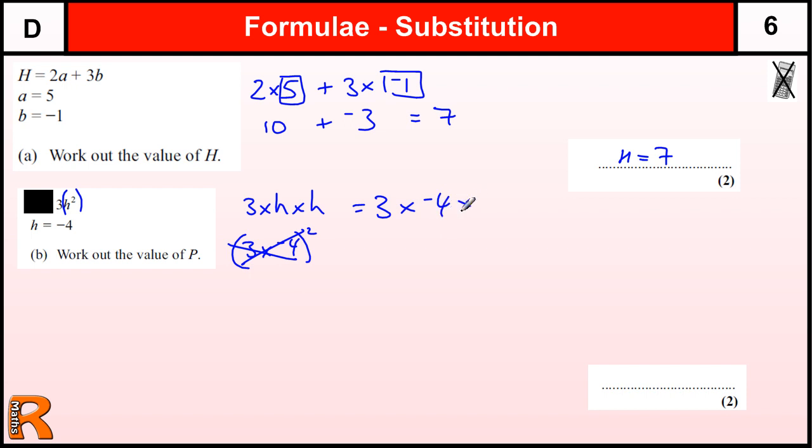So 3 times minus 4 times minus 4. It doesn't matter what order you do this. In fact, what I would do is ignore the negatives completely and just do the numbers. So we've got 3 times 4 is 12, times by 4 is 48. The rule for when you're doing lots of multiplications including negatives is if we count up the negatives, there's two of them.